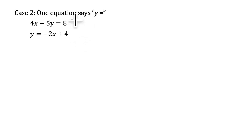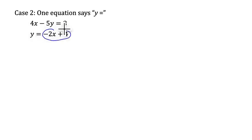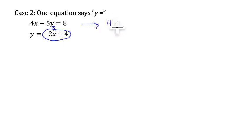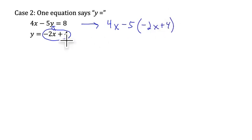We are going to solve another system of equations with substitution. This is a little different — notice that only one of these equations says y equals. So we are going to take the expression that equals y and substitute it into the other equation for y, replacing the y in the first equation with that expression. So rewriting the first equation: 4x minus 5 times the expression that equals y, and it equals 8.